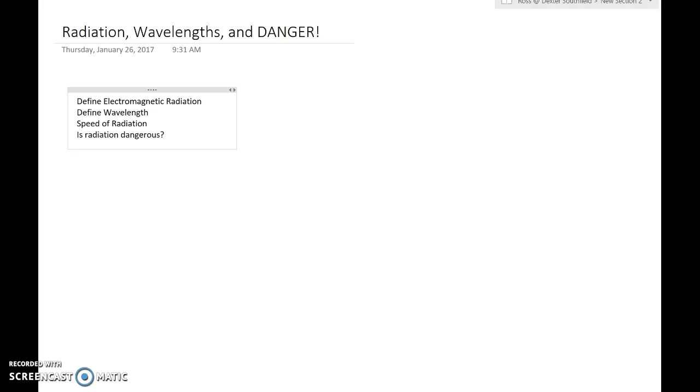So first, just to talk about what electromagnetic radiation actually is. Electromagnetic radiation is essentially any type of radiation given off by a star. Now we can also generate a lot of this radiation, but that's a good way to think about it in terms of its basic form. It originally comes from a star and it travels in waves.